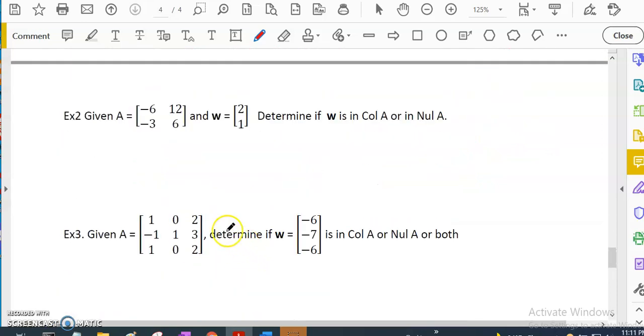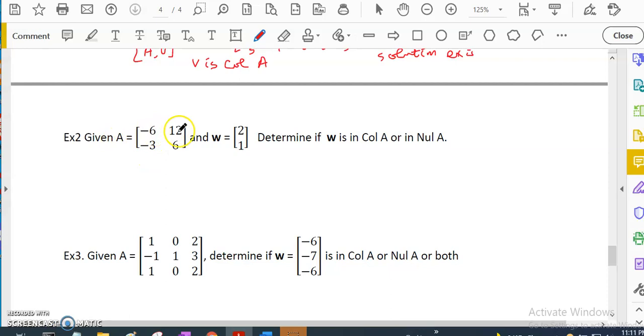Let's do the second example. We have A equal to [-6, 12; -3, 6], and w is [2, 1]. Determine if w is in column A or null A. Let's check null A first. Just multiply [-6, 12; -3, 6] times [2, 1]. So 2 times [-6, -3] plus 1 times [12, 6]. Is it equal to 0? This is -6 plus 6 equals 0. So yes, [2, 1] is in null A.